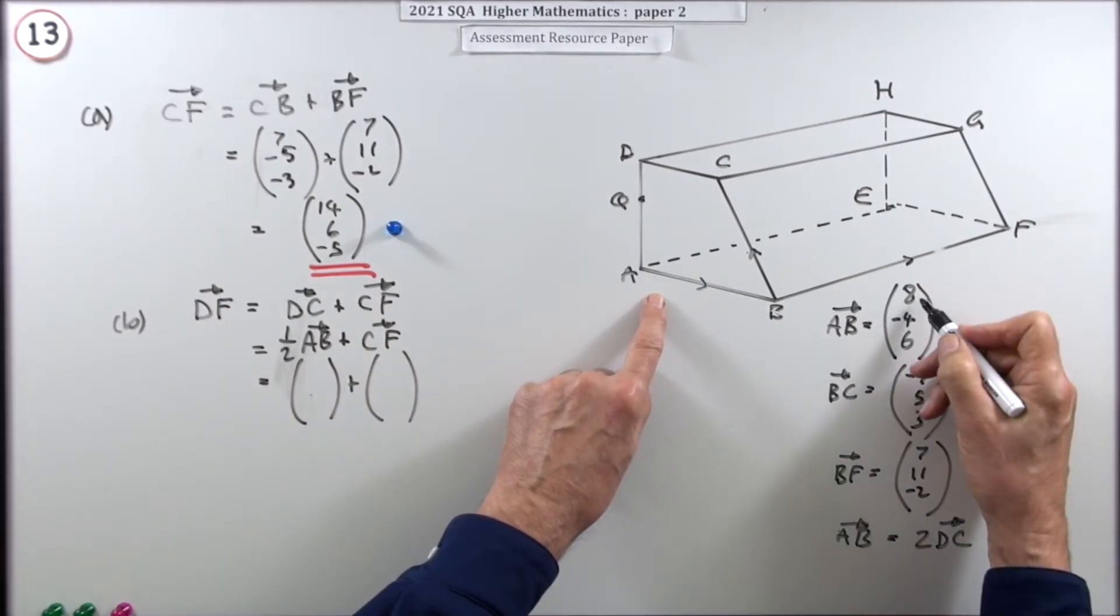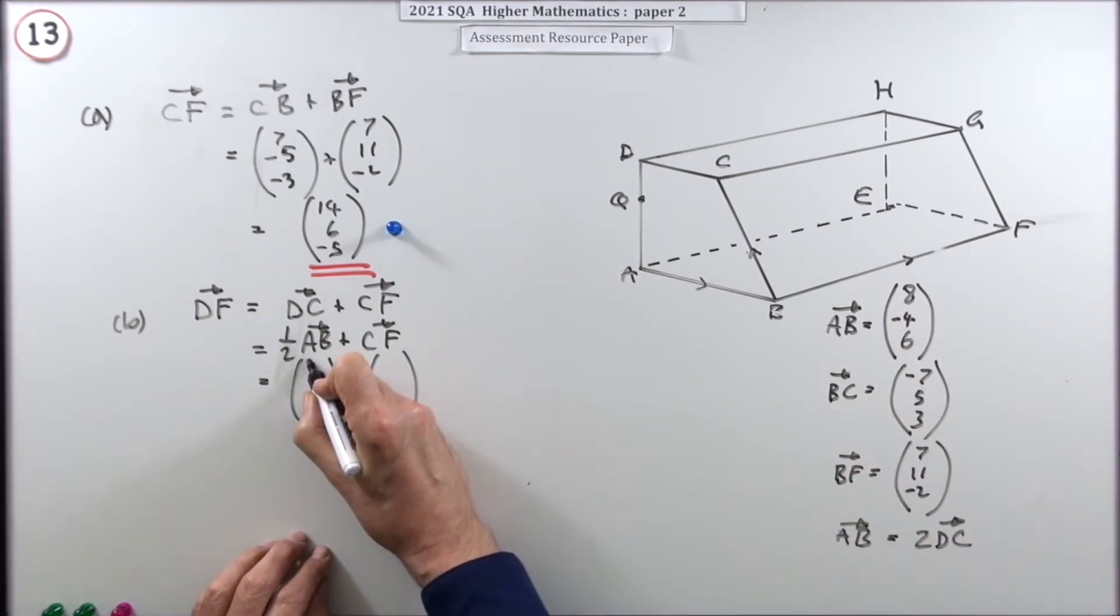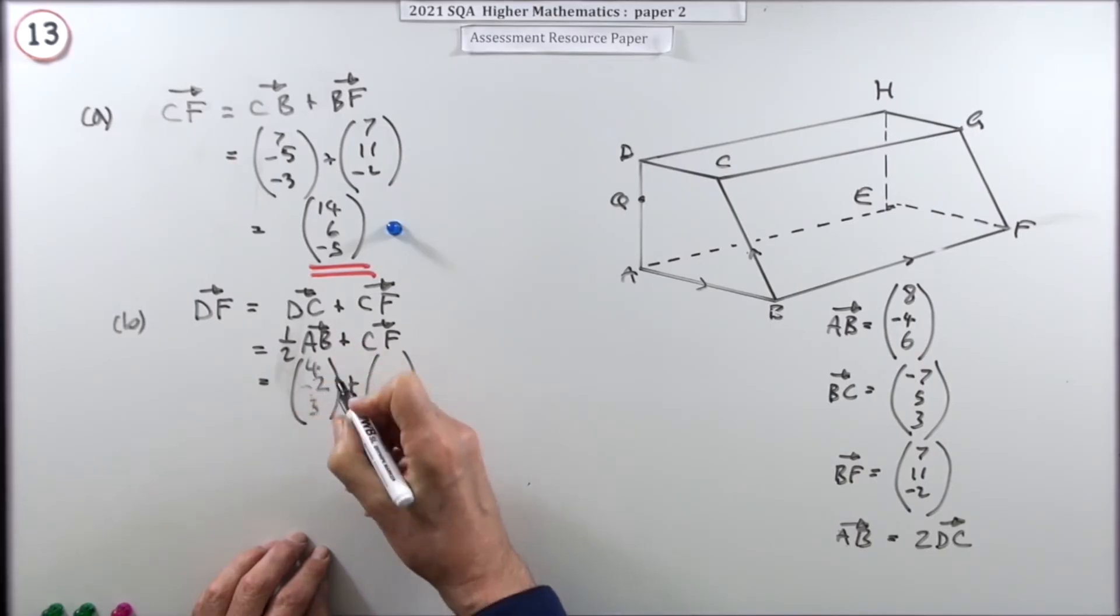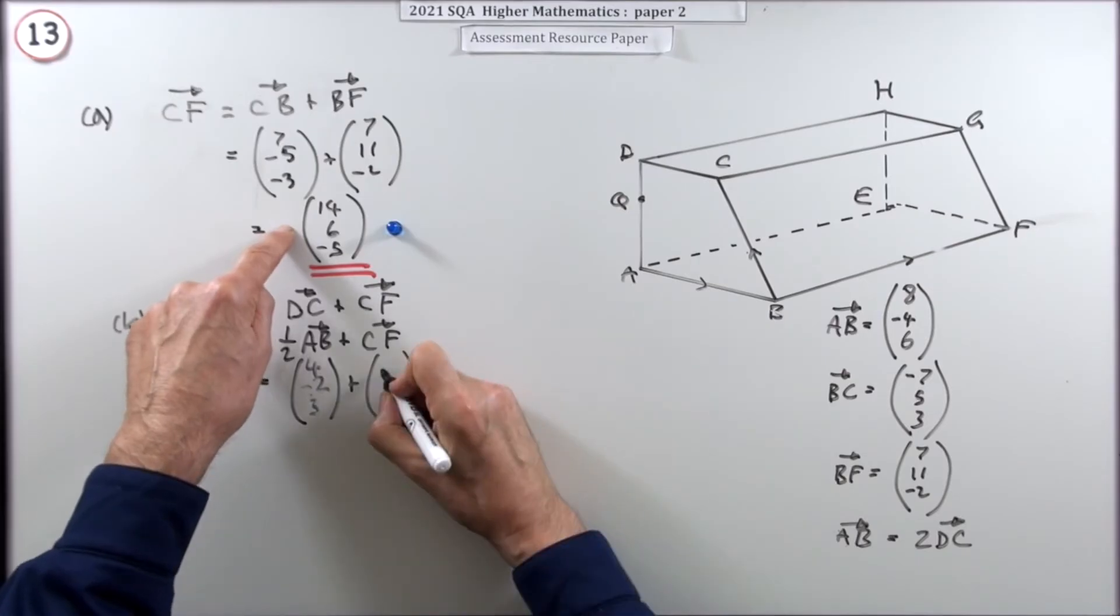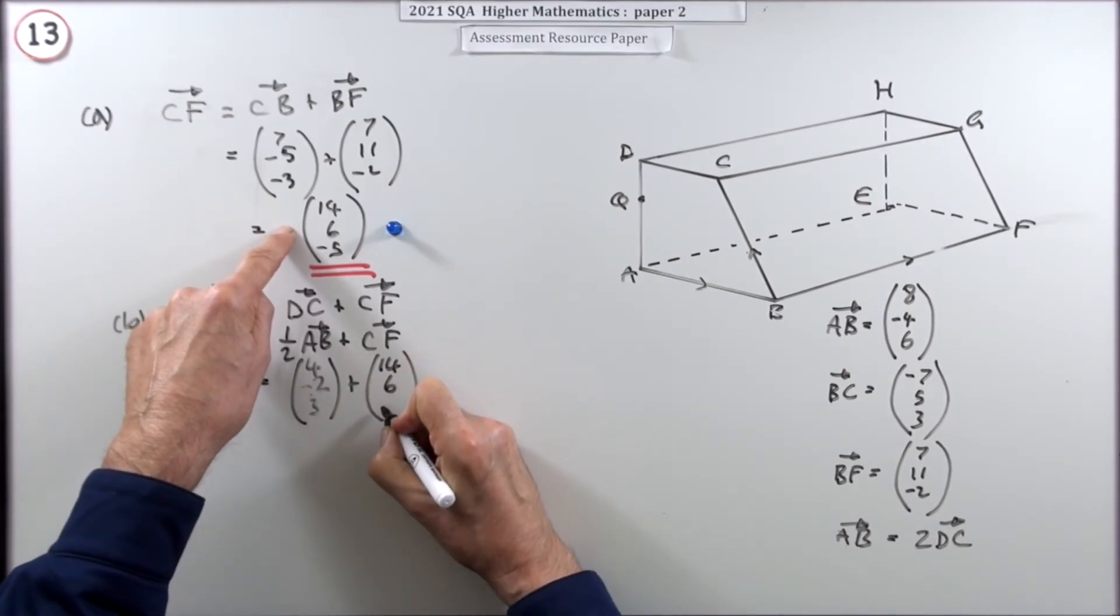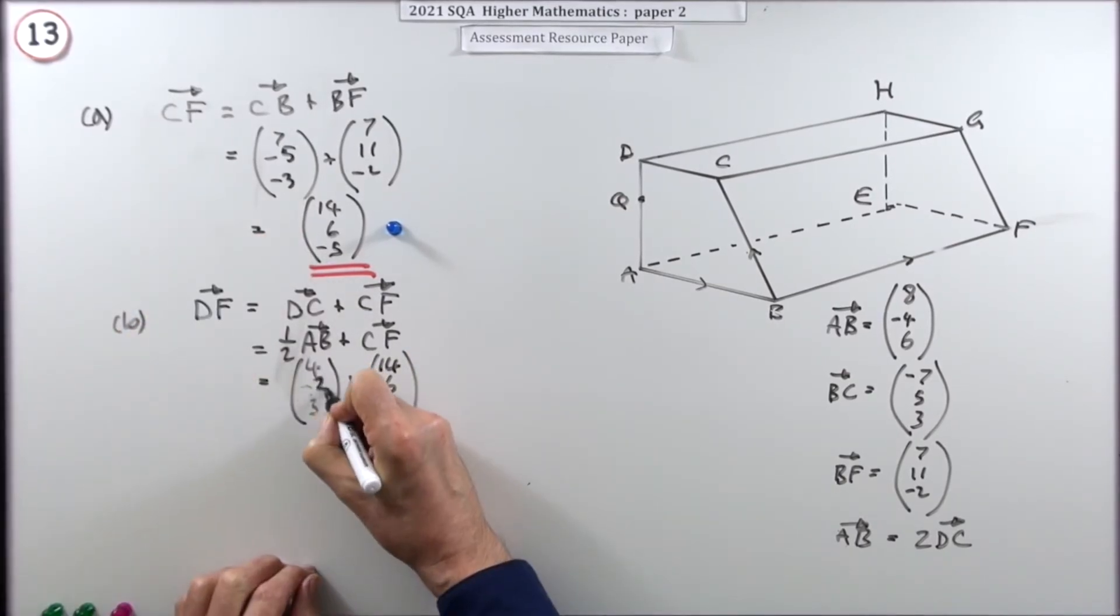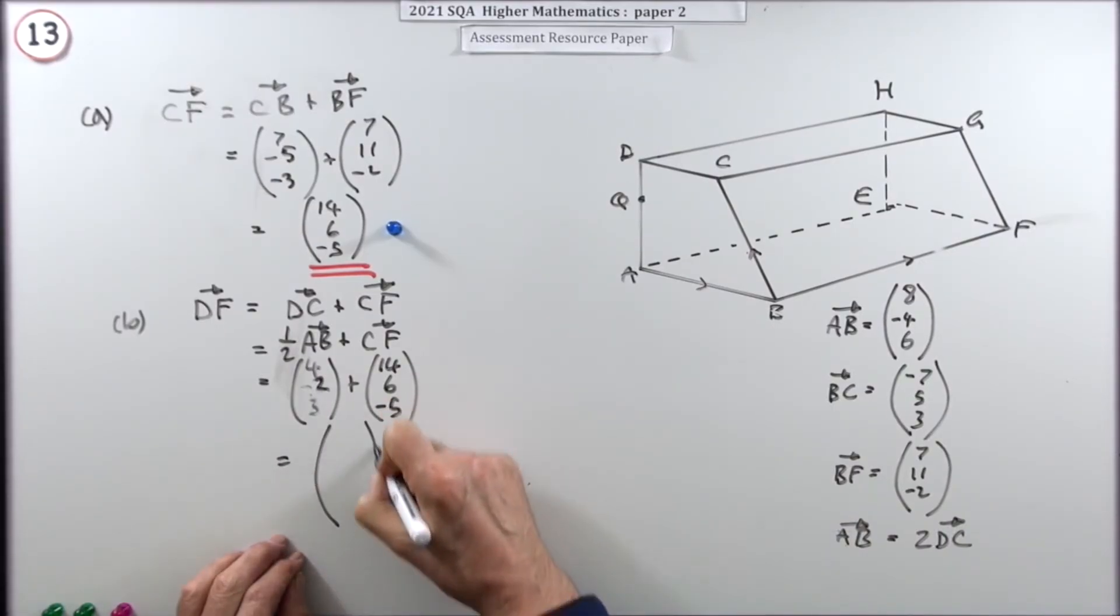Now AB was 8, negative 4, 6. So that'll be half of that. 4, negative 2. 4, negative 2, 3. And that one we just did. So that was the hence part. 14, 6, negative 5. So this will give me this answer now. So that's going to be 18. That's going to be 4. And that's going to be negative 2.